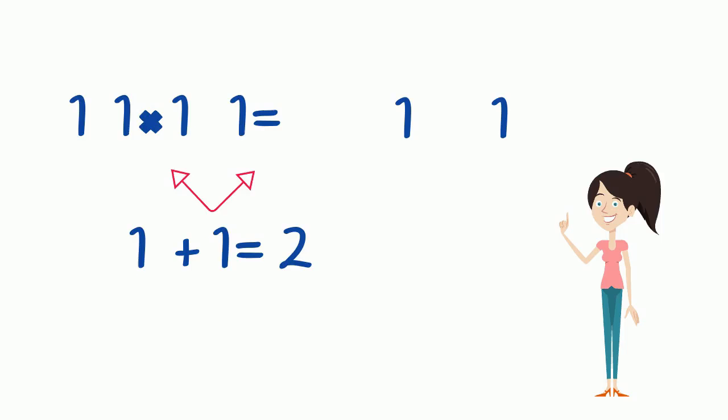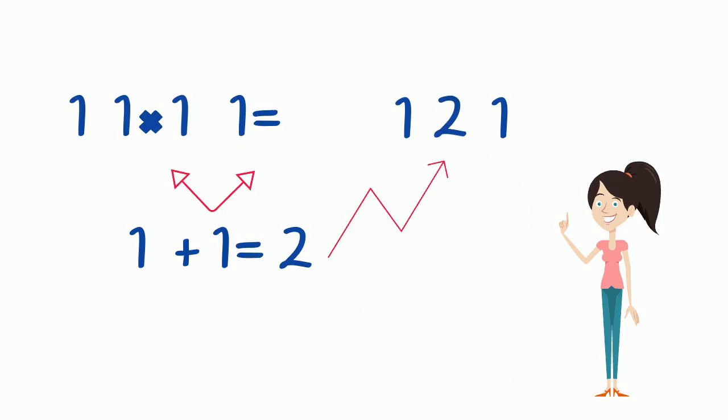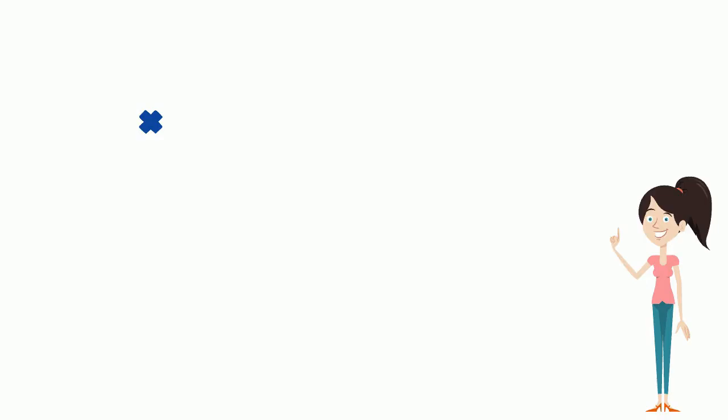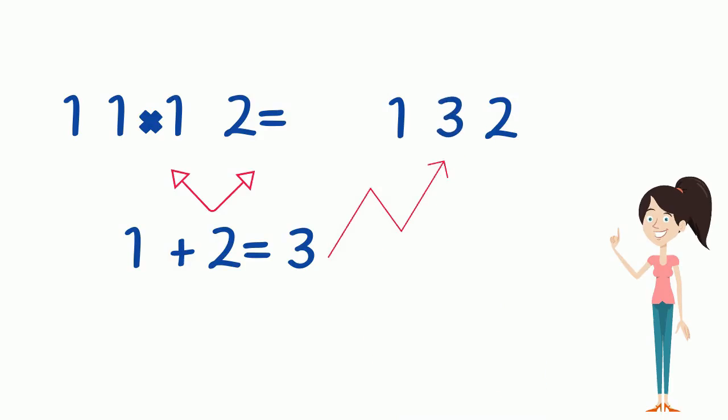What about 11 times 12? I'll write number 12 and leave a gap in between the two digits. Then I add 1 and 2 together which equals 3, and I'll put that 3 in the middle of the two digits. So the answer is 132.